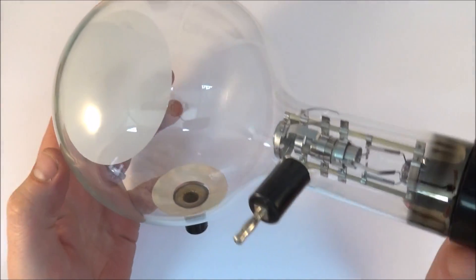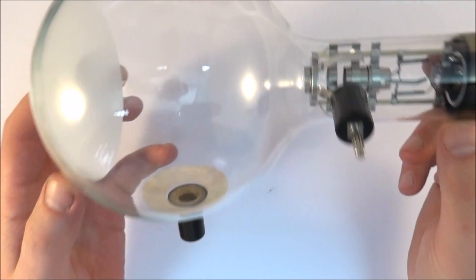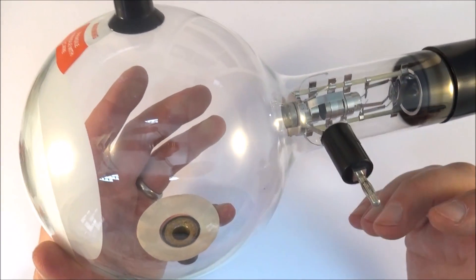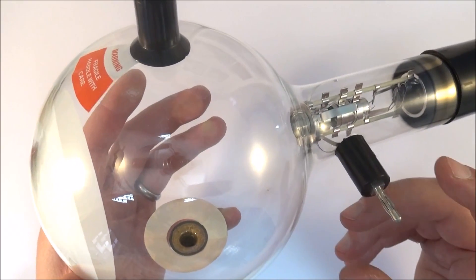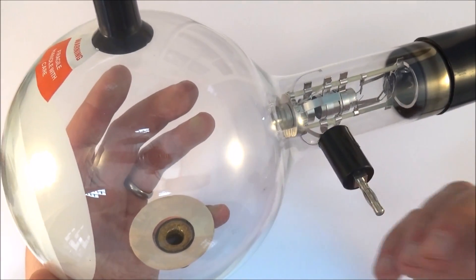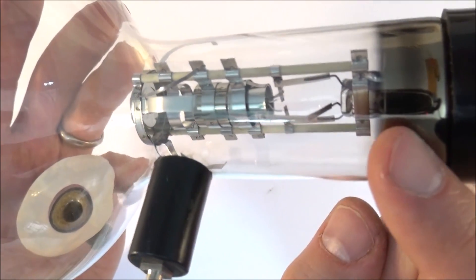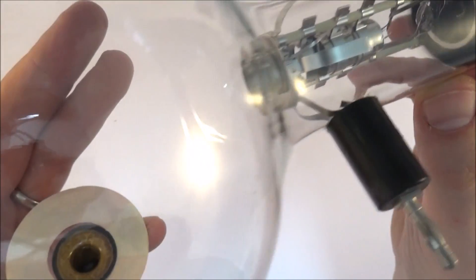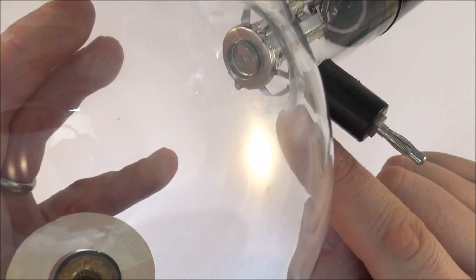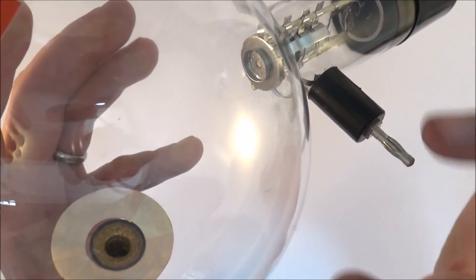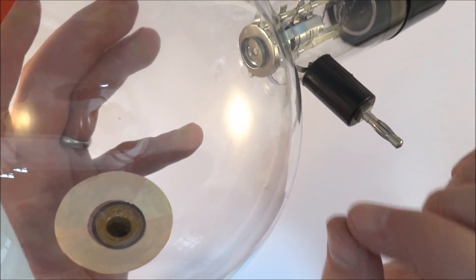This tube here is used for electron diffraction and this shows that particles or things that we normally consider to be particles, these electrons, can actually be diffracted and therefore proving the wave-like nature of some particles. So again we've got thermionic emission down here and actually this bit in here I'm just pointing to, there's a very fine mesh of nickel and deposited onto that is a very thin layer of graphite or carbon and this is the target that's actually acting as our diffraction grating.